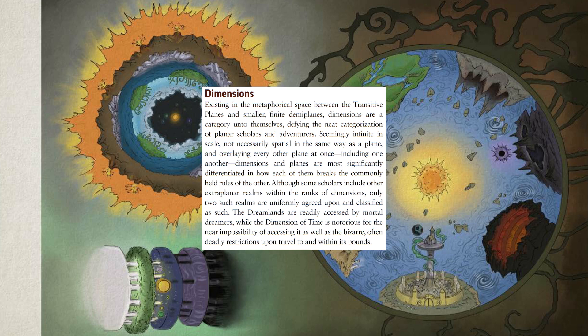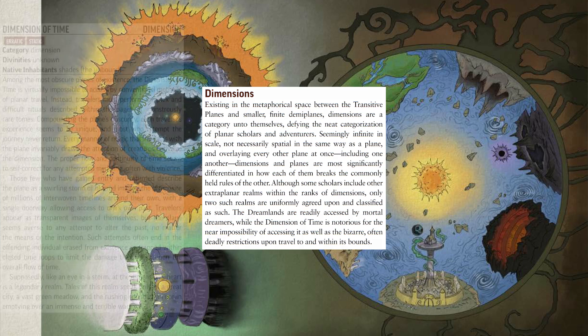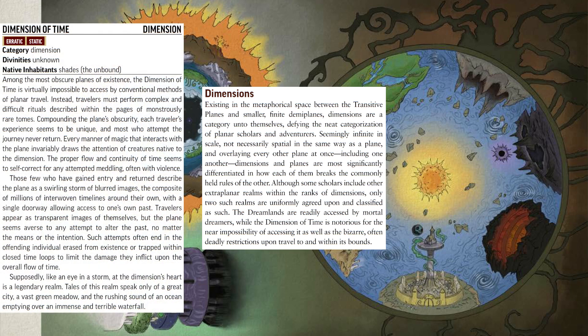While there are many dimensions proposed by various planar scholars, there are only two which are universally agreed upon. The dimension of time has erratic time and static morphology. It is almost impossible to access and most who do never come back. Those who do return have experiences hinting at the possibility of changing one's past, except for the many ways the dimension and its denizens prohibit such tampering.